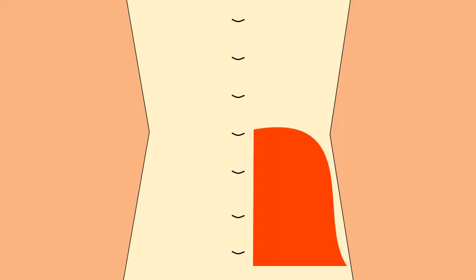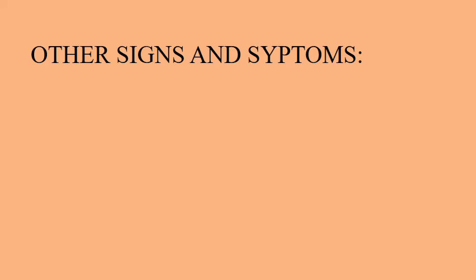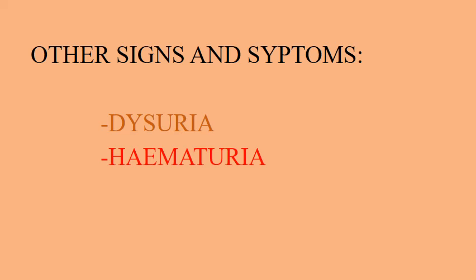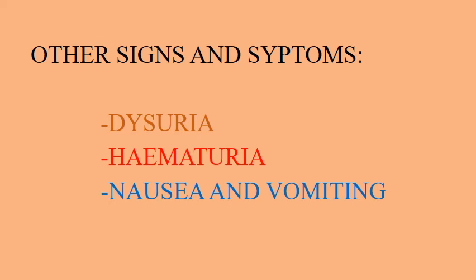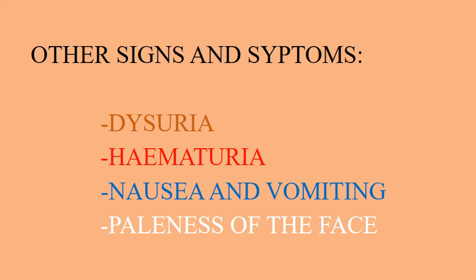The pain can also radiate down towards the genitalia. Other signs and symptoms may be present, such as dysuria, meaning pain or burning sensation during urination; hematuria, meaning blood in urine; nausea and vomiting; and paleness of the face.